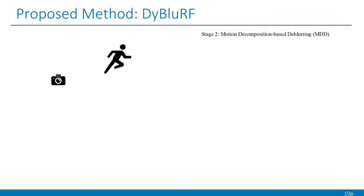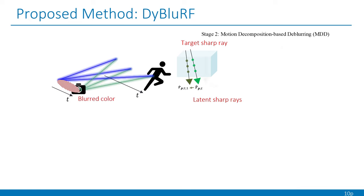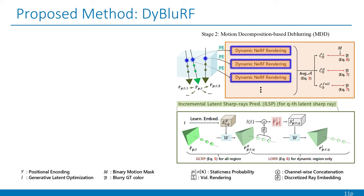In the MDD stage, we propose a novel incremental latent sharp rays prediction method which effectively synthesizes the physical blur process considering global camera motion and local object motion based on the target sharp ray. For each predicted latent sharp rays as well as the base ray, DyBluRF separately renders the colors and averages them to predict the blurry static, dynamic, and full colors.